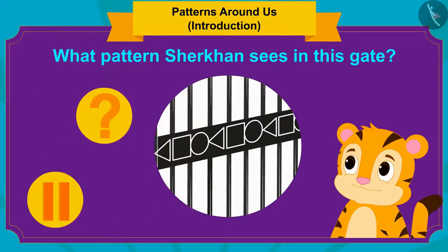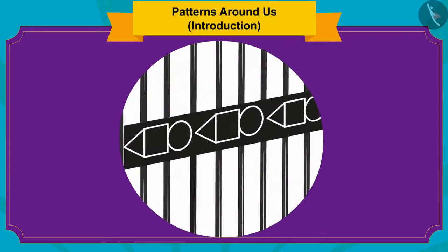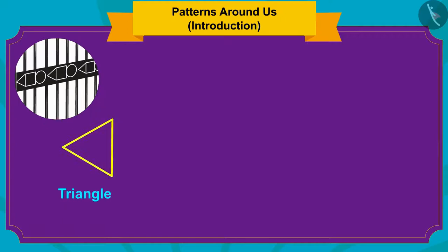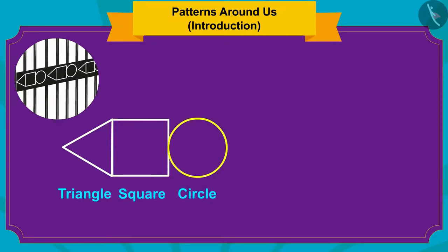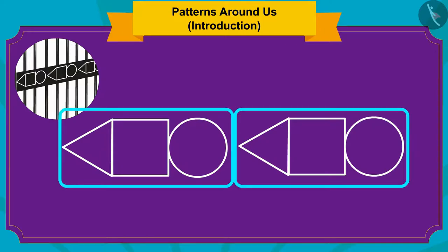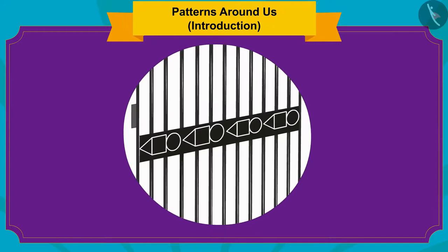You can stop the video and think about it for a while. If we look at the gate carefully, we will find that here a triangle is formed first. Then after that, one square is formed. And finally, a circle shape is formed. After the circle, the three shapes are repeated once again in the same order. In this way, a pattern has been made using shapes in this gate.